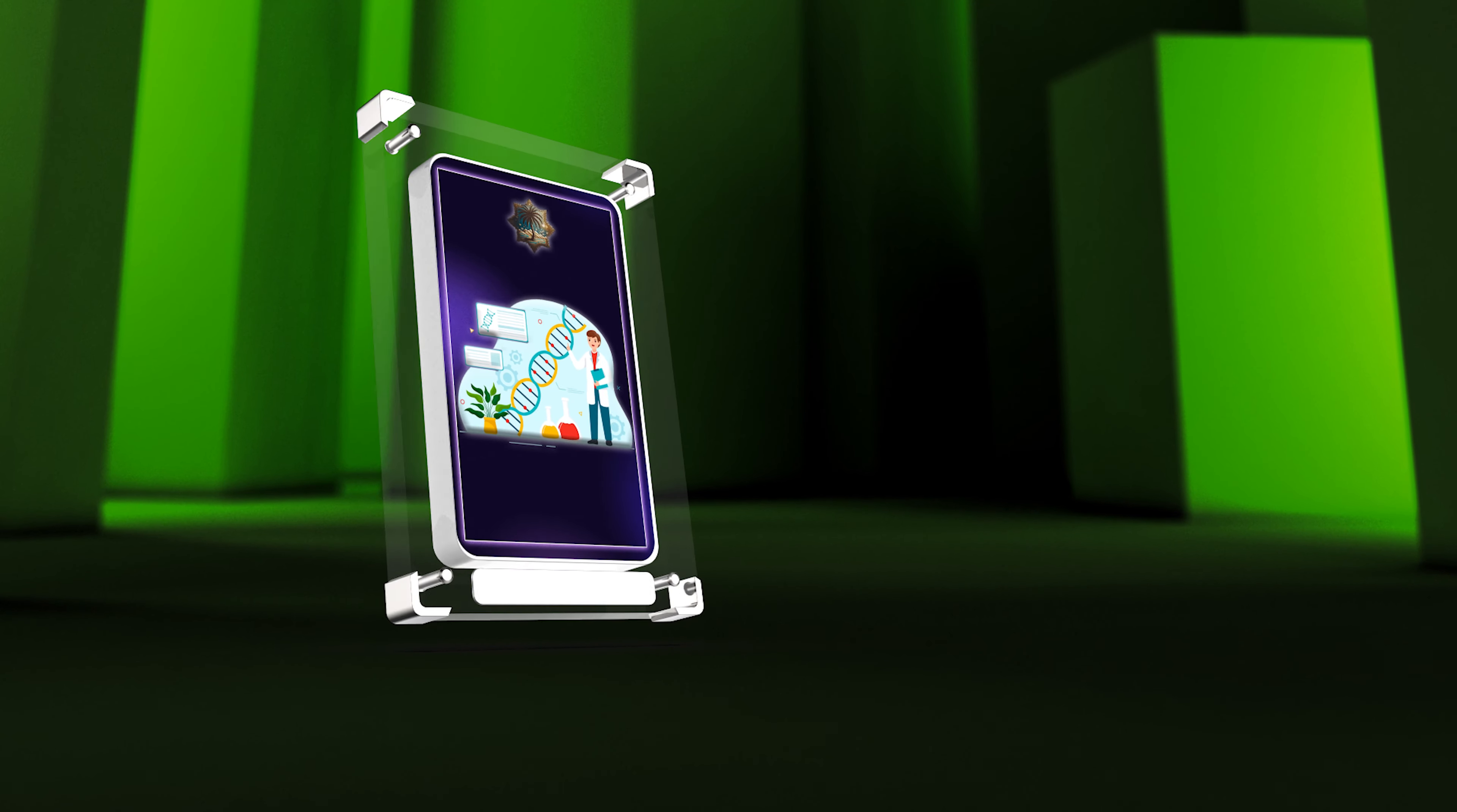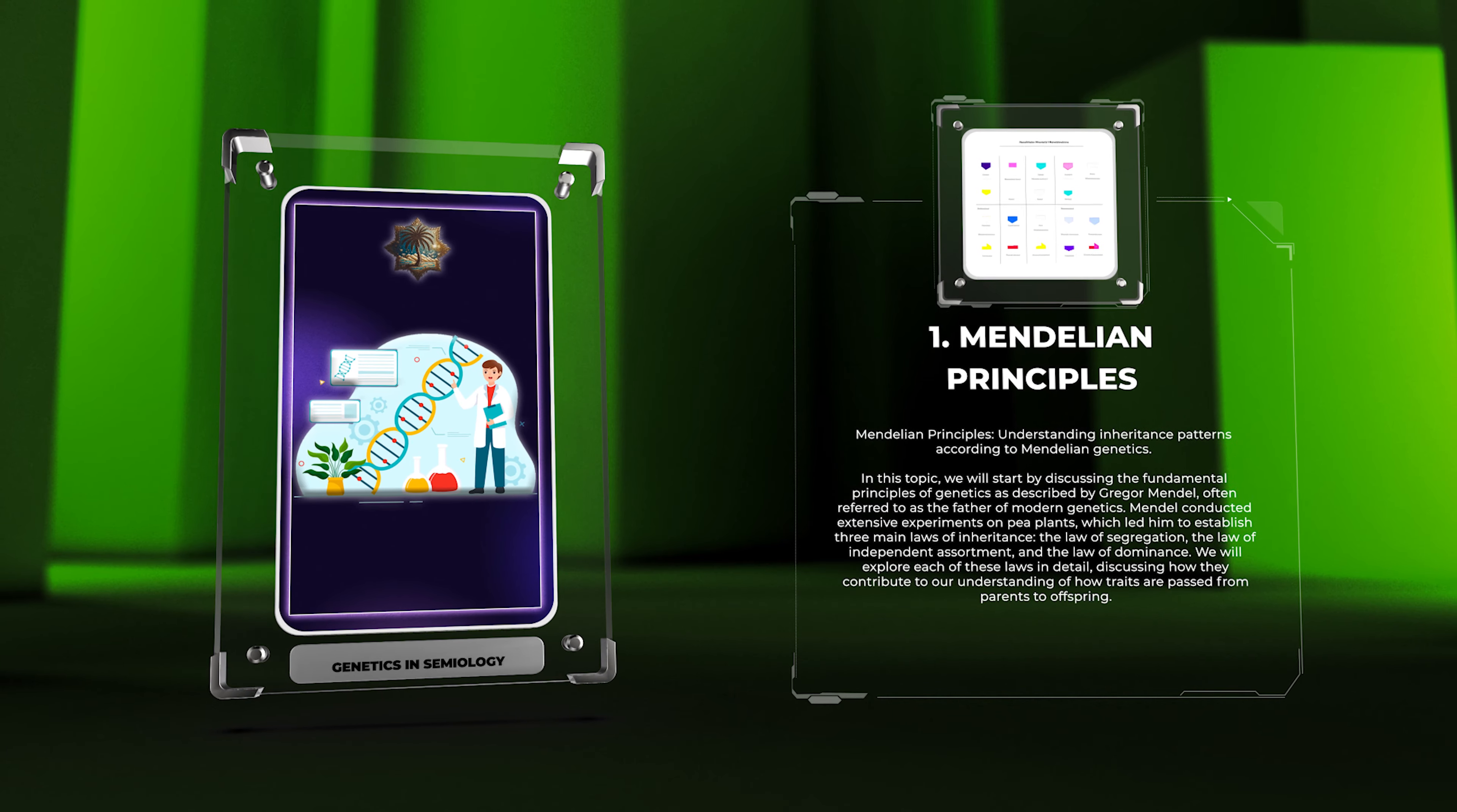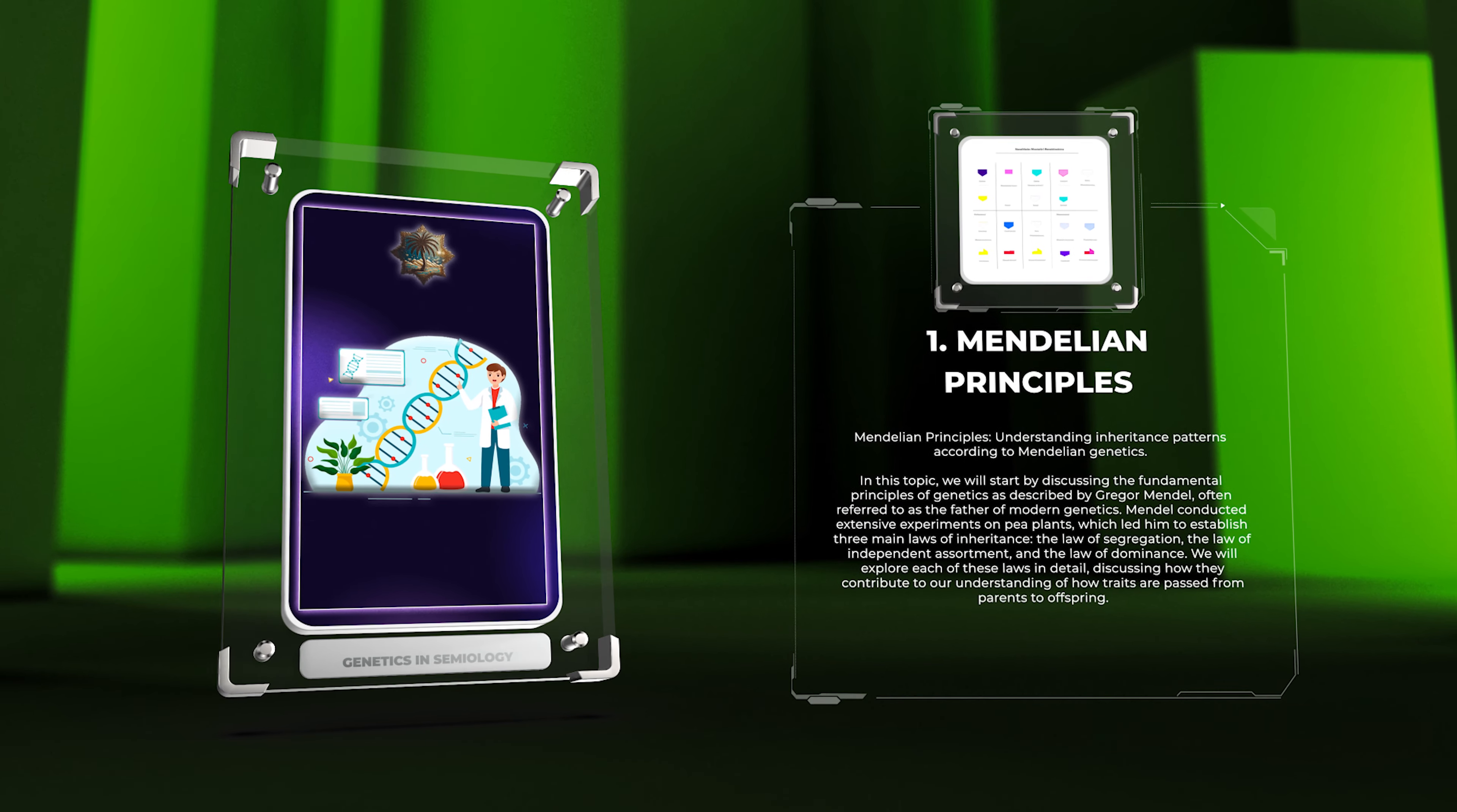Mendelian principles: understanding inheritance patterns according to Mendelian genetics. In this topic, we will start by discussing the fundamental principles of genetics as described by Gregor Mendel, often referred to as the father of modern genetics. Mendel conducted extensive experiments on pea plants, which led him to establish three main laws of inheritance: the law of segregation, the law of independent assortment, and the law of dominance. We will explore each of these laws in detail, discussing how they contribute to our understanding of how traits are passed from parents to offspring.